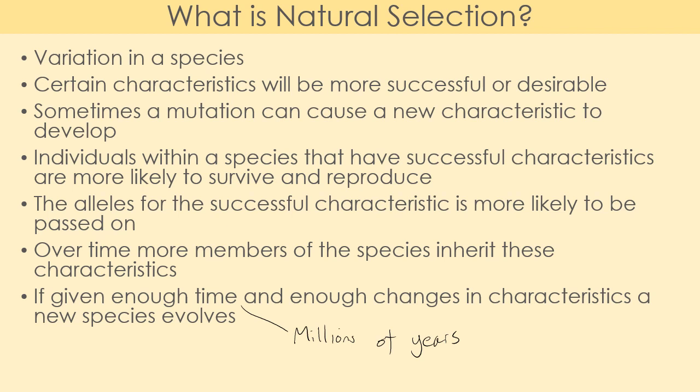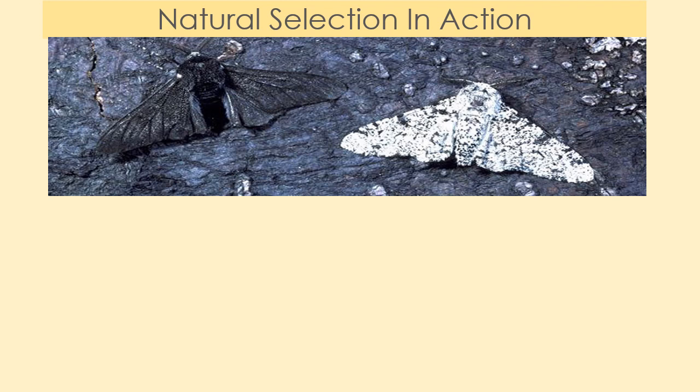We're now going to look at natural selection in action. I'll talk through a few examples and then you'll have a go yourself. First, a very classic example that actually happened fairly quickly: the peppered moth. You can see we have a very light colored one and also a dark colored one, which is harder to see. They are the same species — just different colors.